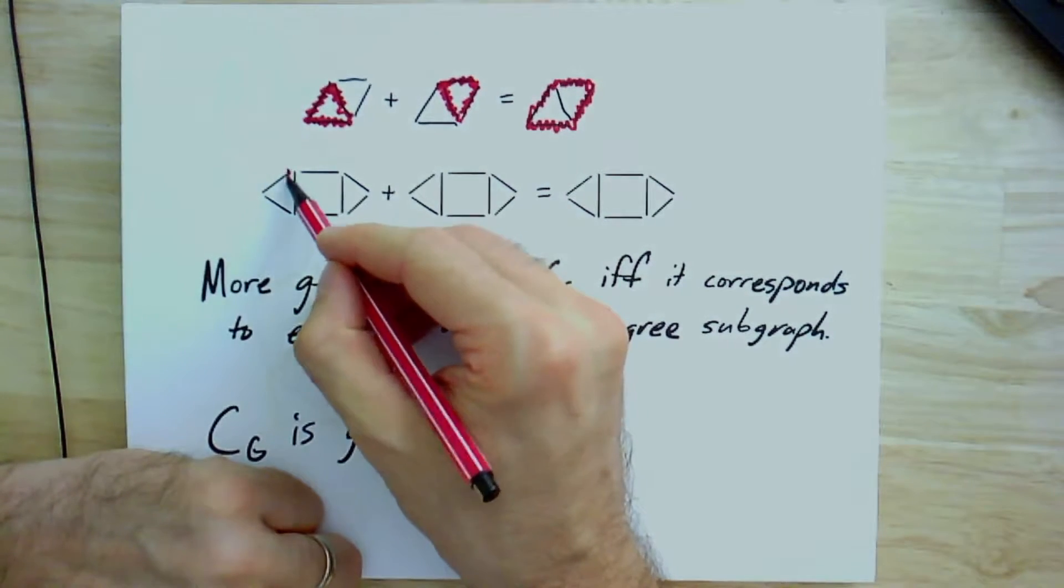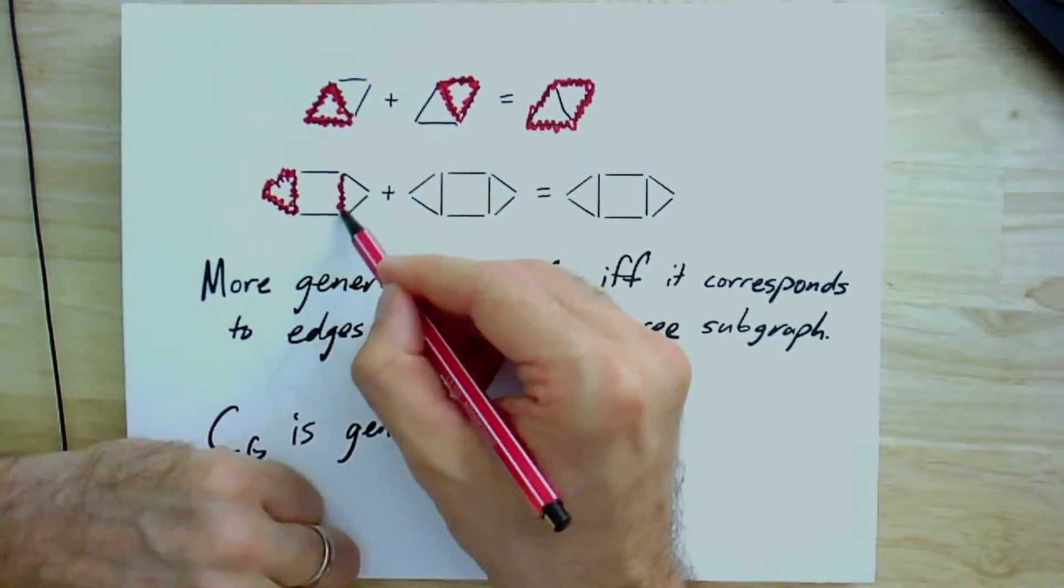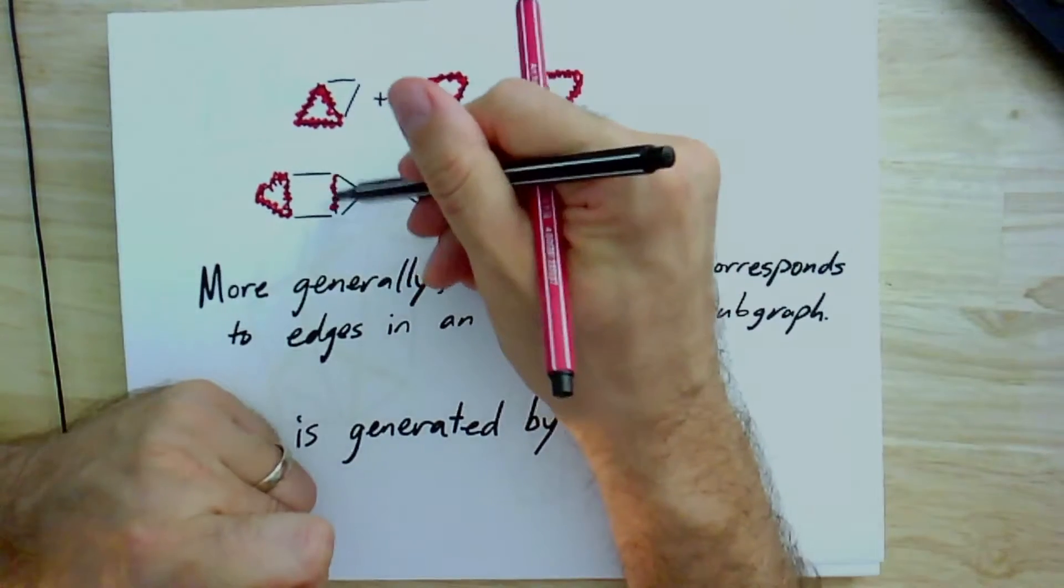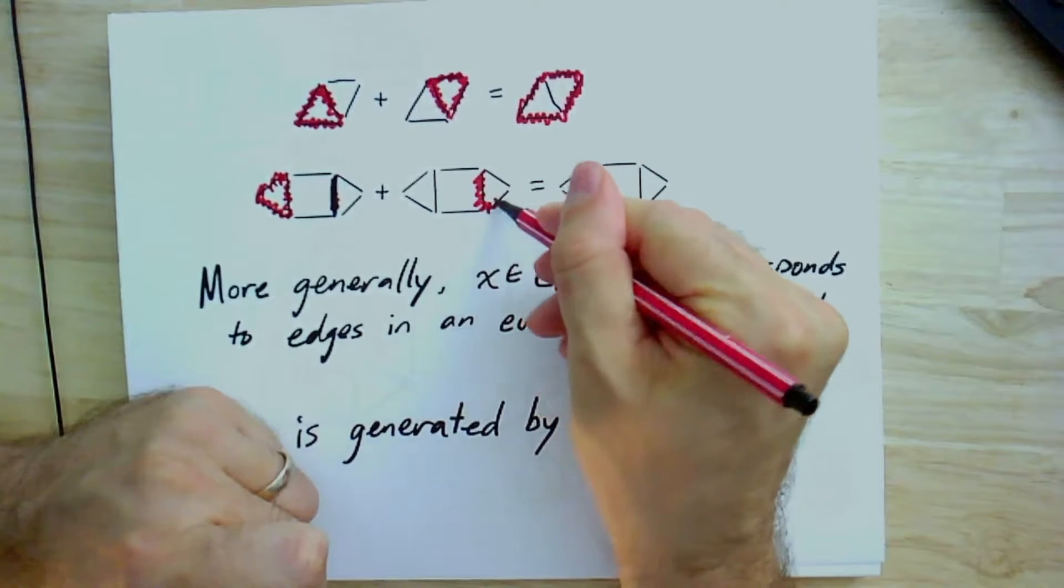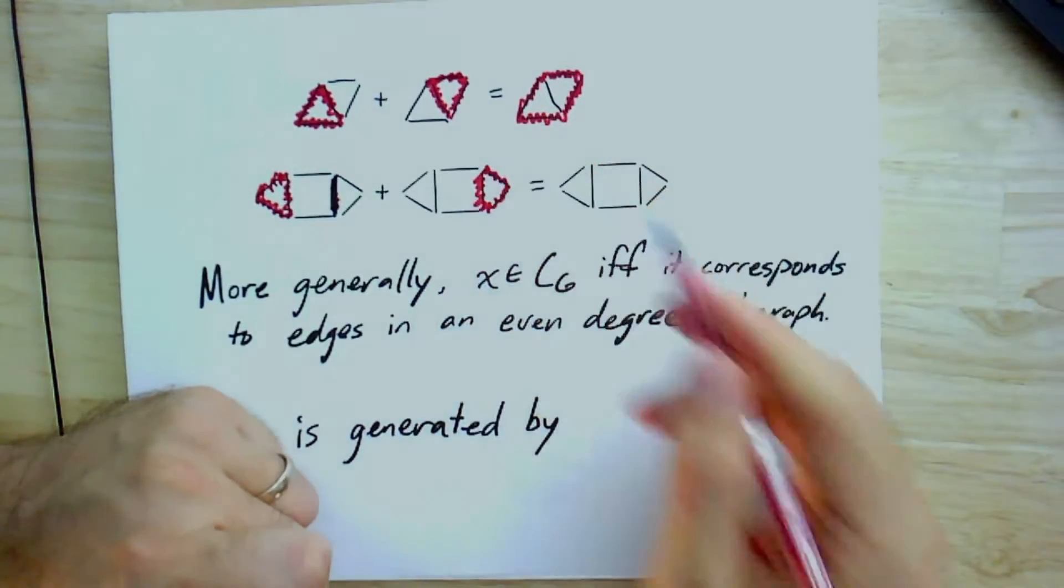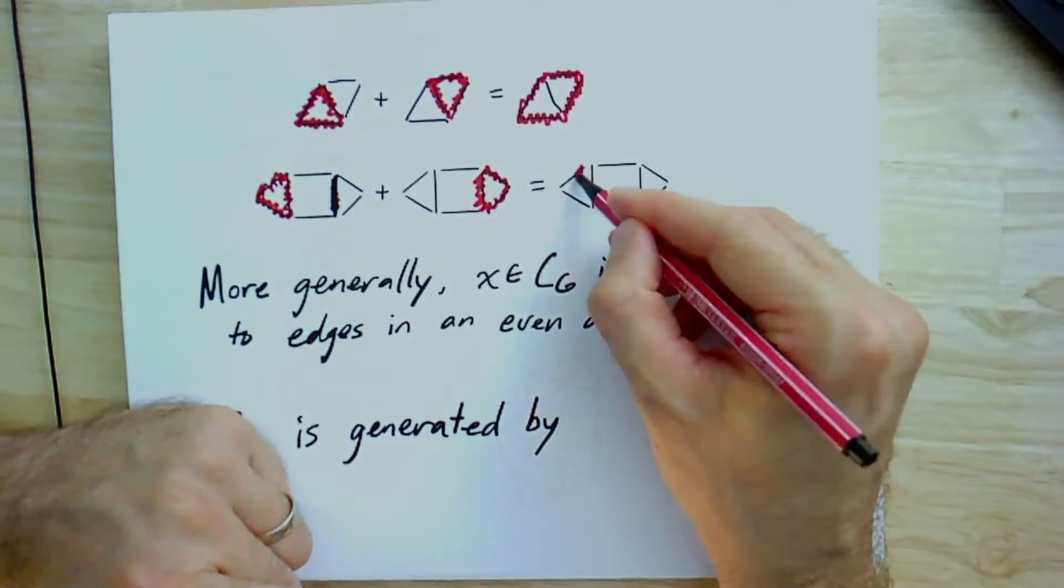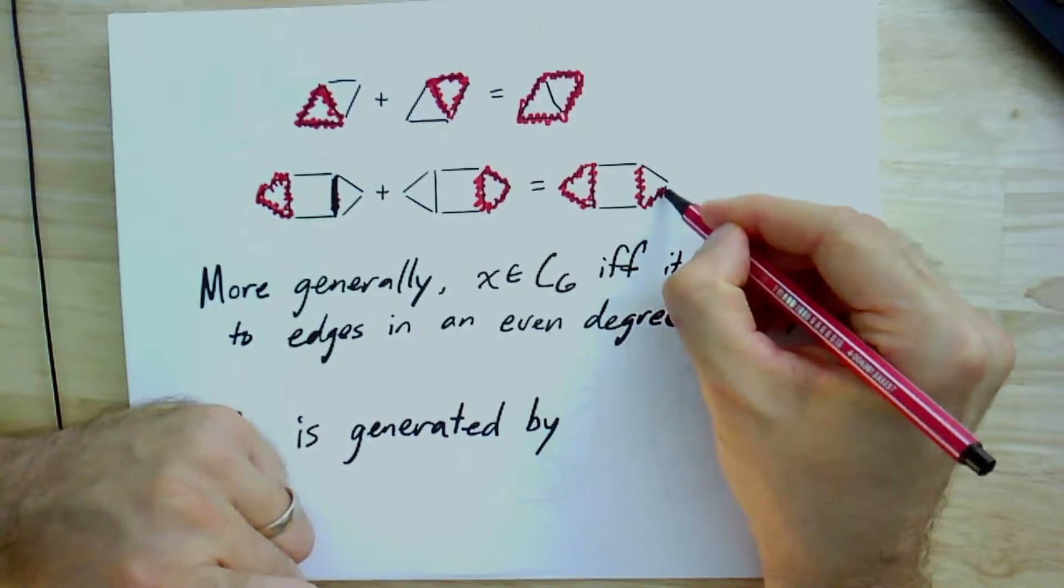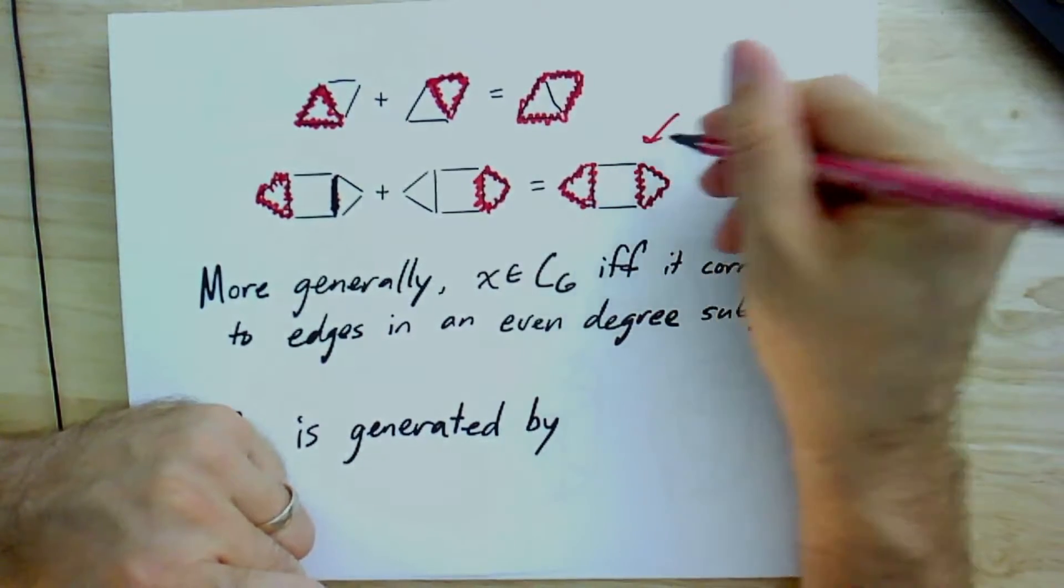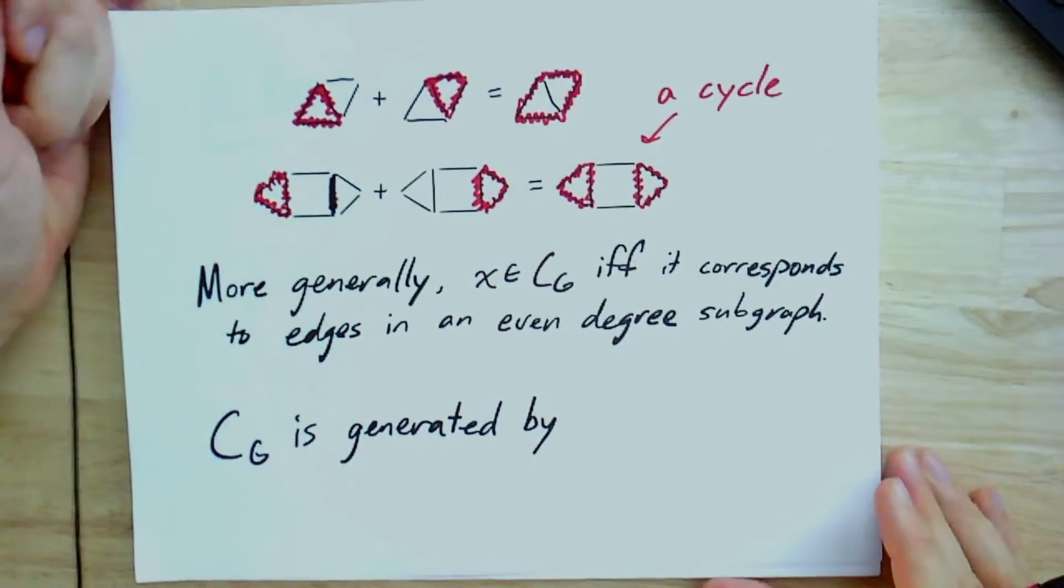It's not always exactly the case, though, because I could have added this cycle plus this one over here. And their sum, the symmetric difference, well, they're disjoint, so the symmetric difference is just their union. And it would be this. And so now we're left with this kind of conundrum to ask, is this really a cycle?